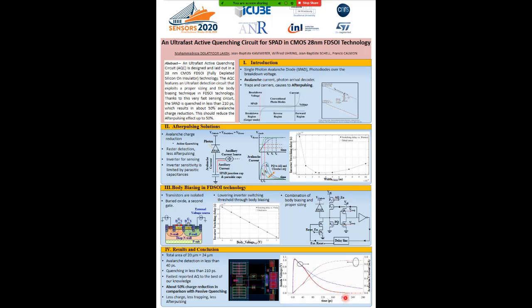Thanks to this ultra-fast circuit, the area under the avalanche current, which is equal to the avalanche charge in active quenching mode, is about 50% less than this area in passive quenching mode. Consequently, our active quenching circuit should reduce the after-pulsing up to 50%.